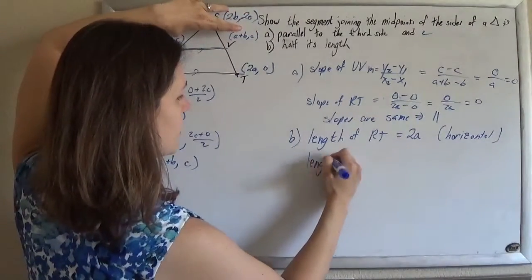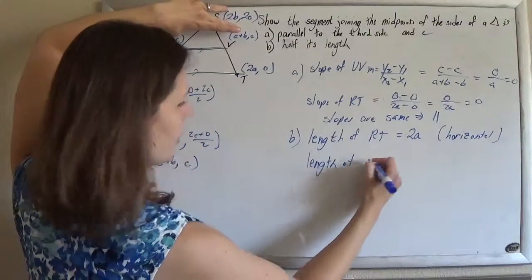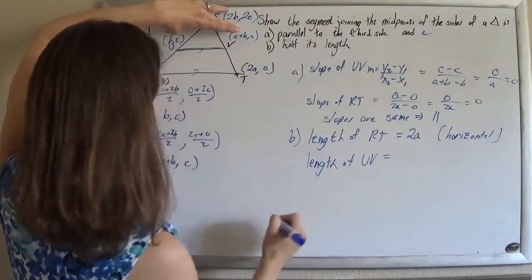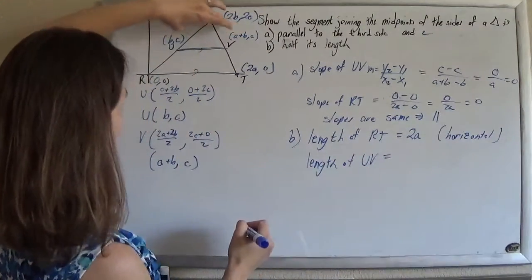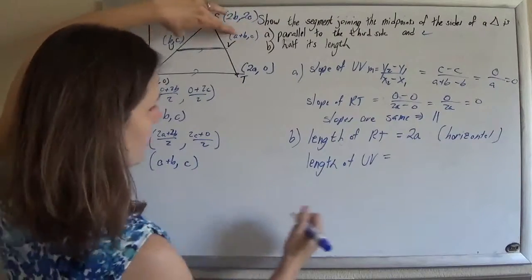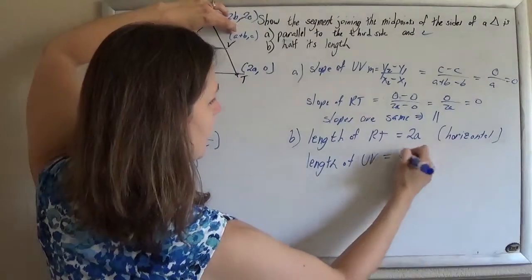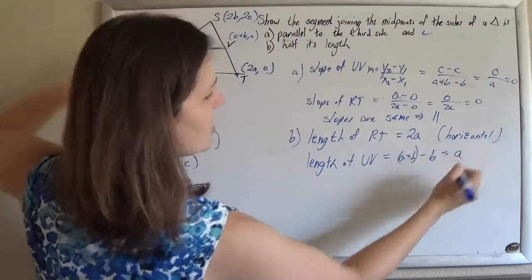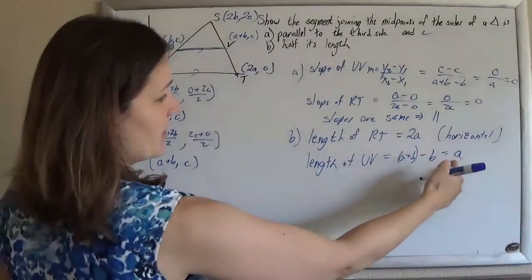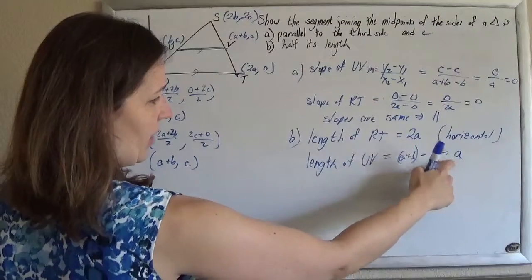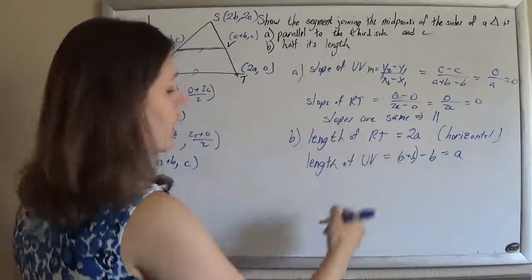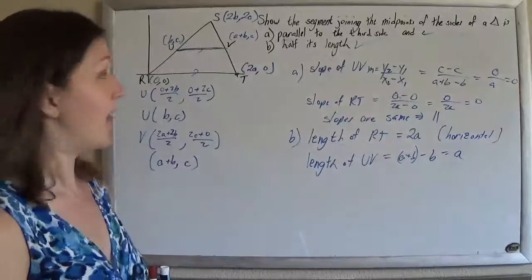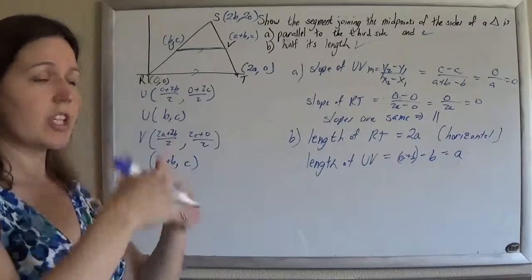So when I go to find the length of uv, I'm just going to subtract the x-coordinates. So it's a plus b minus b, so that's just a. And then we definitely see that a is half of 2a, and so it's half its length. And that's all we need to show. Check.